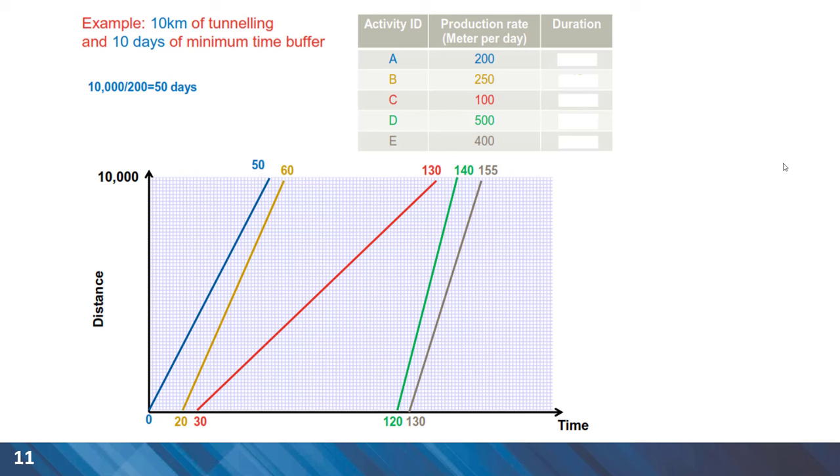Activity C is a slower activity than B. The buffer is considered for the start time starting at 30 days and then the duration of 100 days. We have the finish time. Then activity D is faster than C. We consider the buffer for finish time. And finally activity E is slower than the predecessor activity D. Starting at day 130, the activity finishes at day 155 and also the project finish time is 155 days.